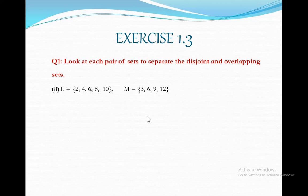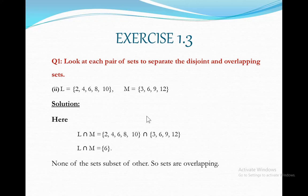We consider their intersection in the solution. L intersection M, that is 2, 4, 6, 8, 10 intersection 3, 6, 9, 12. Very simple and clear, only element 6 is common among both. L intersection M is equal to 6. Moreover you can see that no set is the subset of the other. Hence these sets are overlapping sets.